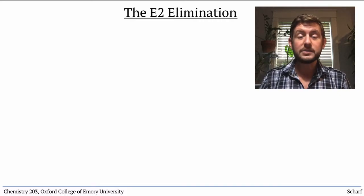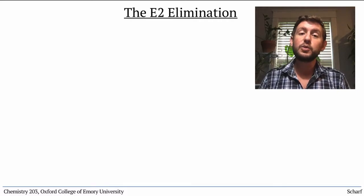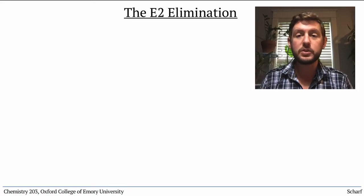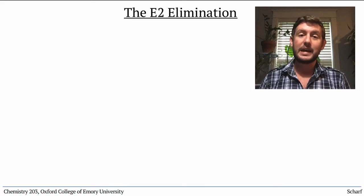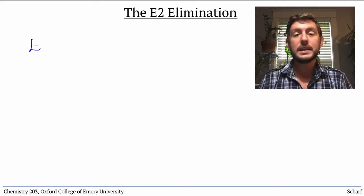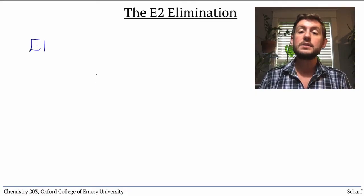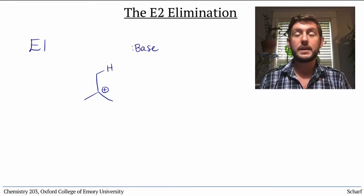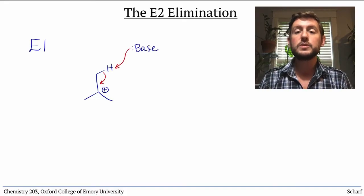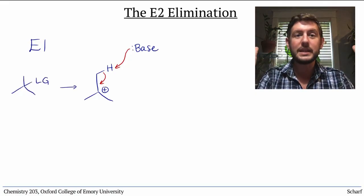You've now seen that leaving groups can be eliminated, as opposed to substituted, if they have adjacent hydrogens, resulting in alkenes. In the E1 elimination, this occurs when a weak base deprotonates the carbon next to a carbocation, which was formed from a leaving group just leaving.